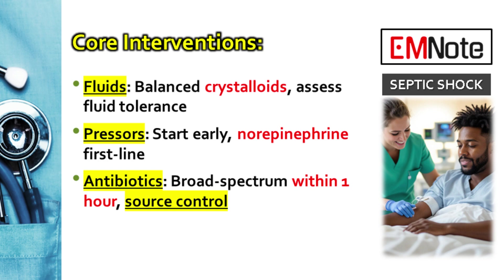If the mean arterial pressure stays under 65 mmHg or perfusion signs aren't improving, start pressors early — this directly treats the massive vasodilation. You can start them peripherally; a proximal 20-gauge IV or bigger is fine. First line is norepinephrine, targeting a MAP of 65 or higher. If the norepinephrine dose climbs towards 0.25–0.5 mcg/kg/min, add vasopressin at a fixed dose of 0.03–0.04 units per minute — it works differently and helps spare catecholamines. For refractory shock or a cardiogenic component, add epinephrine. A big clue for profound vasoplegia is a diastolic BP under 60 mmHg, meaning almost no vascular tone left. The diastolic shock index — heart rate divided by diastolic BP — if that ratio is over 2.2, that strongly suggests severe vasodilation.